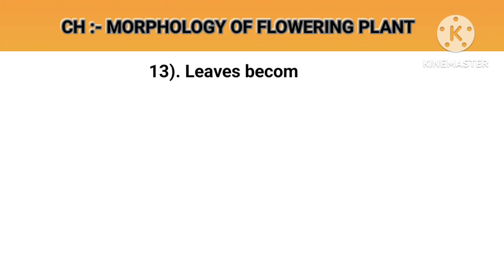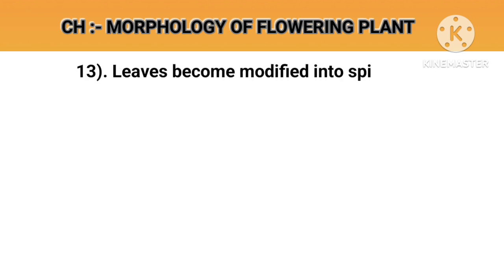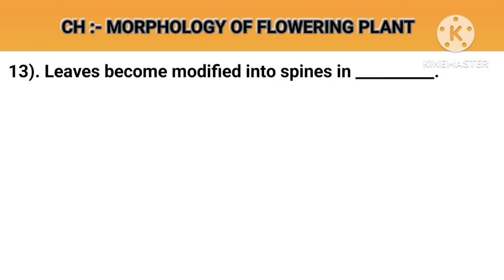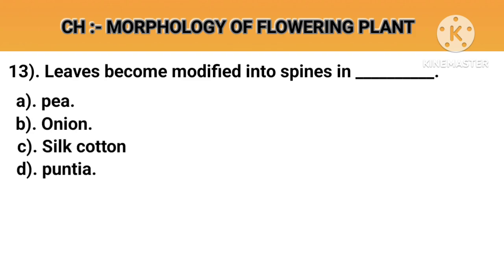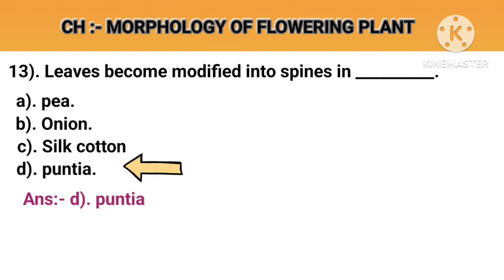Question number 13. Leaves become modified into spines in. Option A: P. Option B: Onion. Option C: Silk cotton. Option D: Opuntia. Answer D: Opuntia.